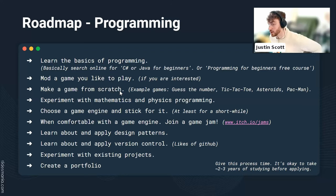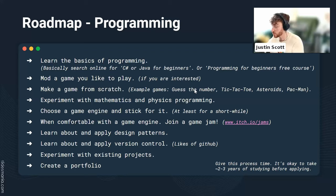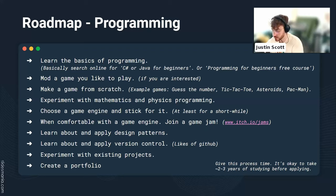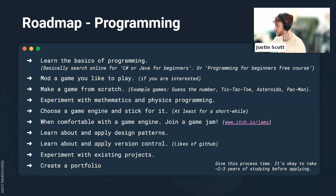Experiment with existing projects — on GitHub you can find open source projects. This is important because when you join a company you'll always work on a game already in development. Download projects from the internet or contribute to open source ones, going into existing code to add and modify features. Finally, create a portfolio showcasing your games — especially your mathematics and physics experiments, and your game jam projects you're proud of — so interviewers can see your skills. Feel free to screenshot this roadmap for later usage.